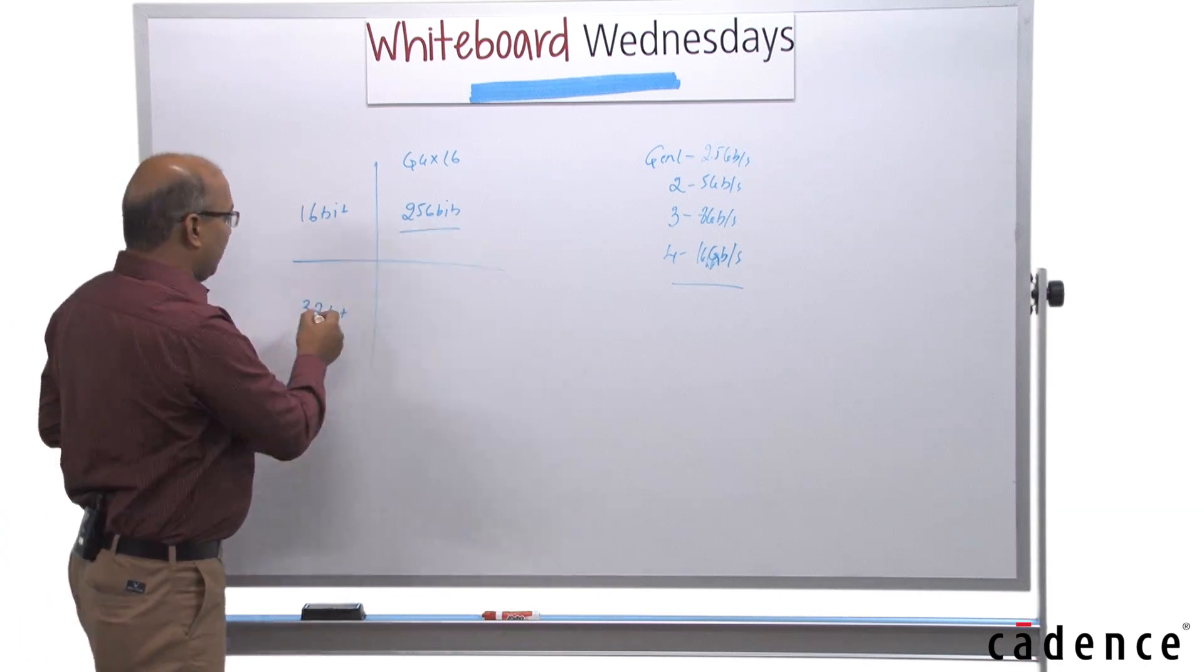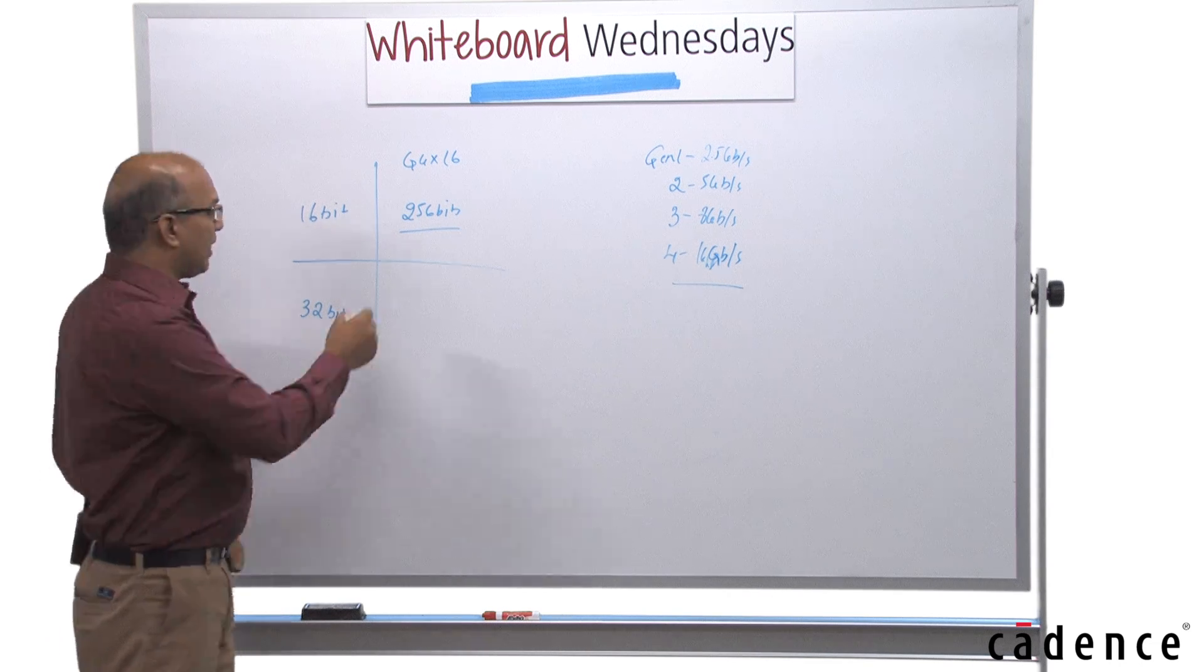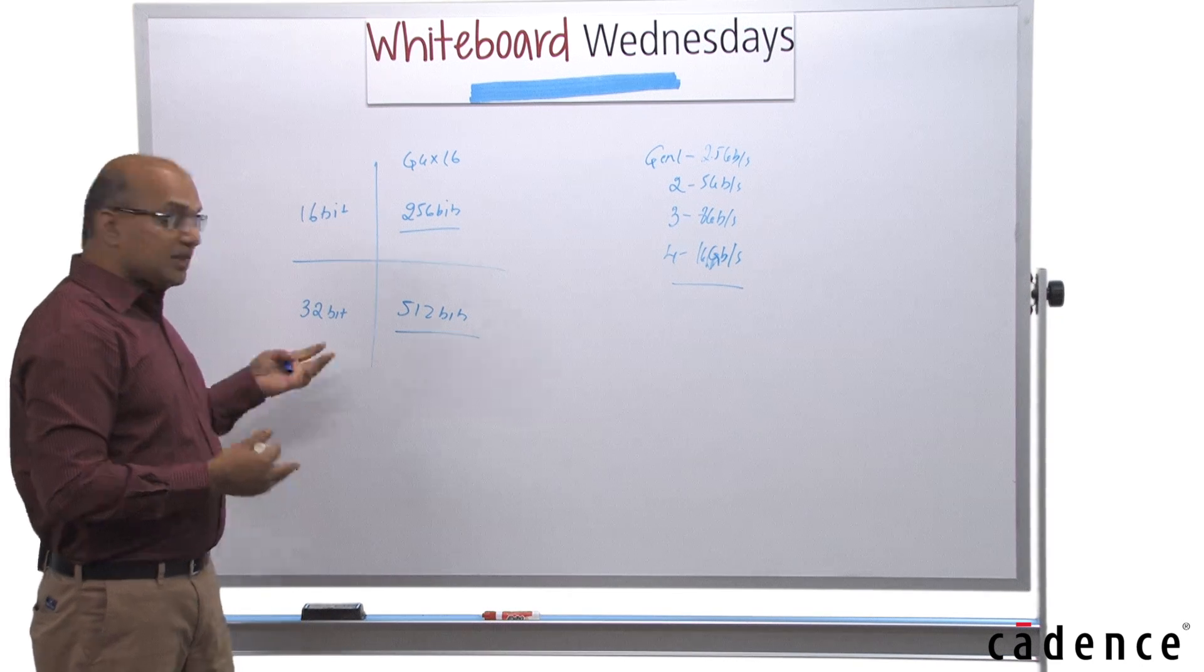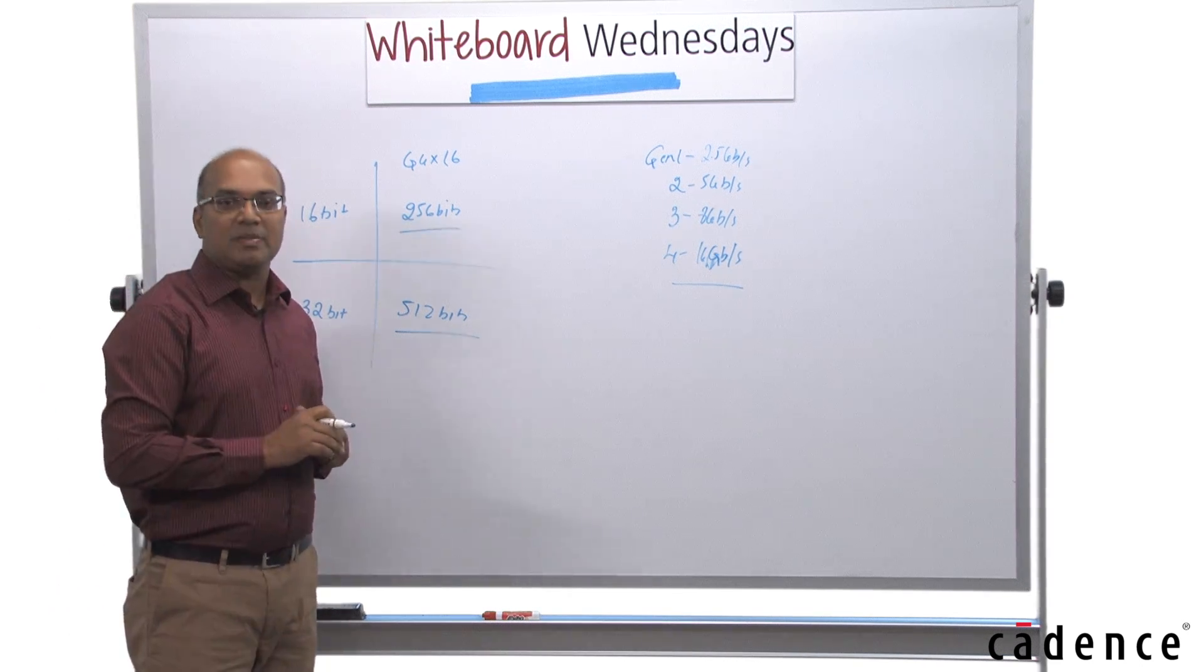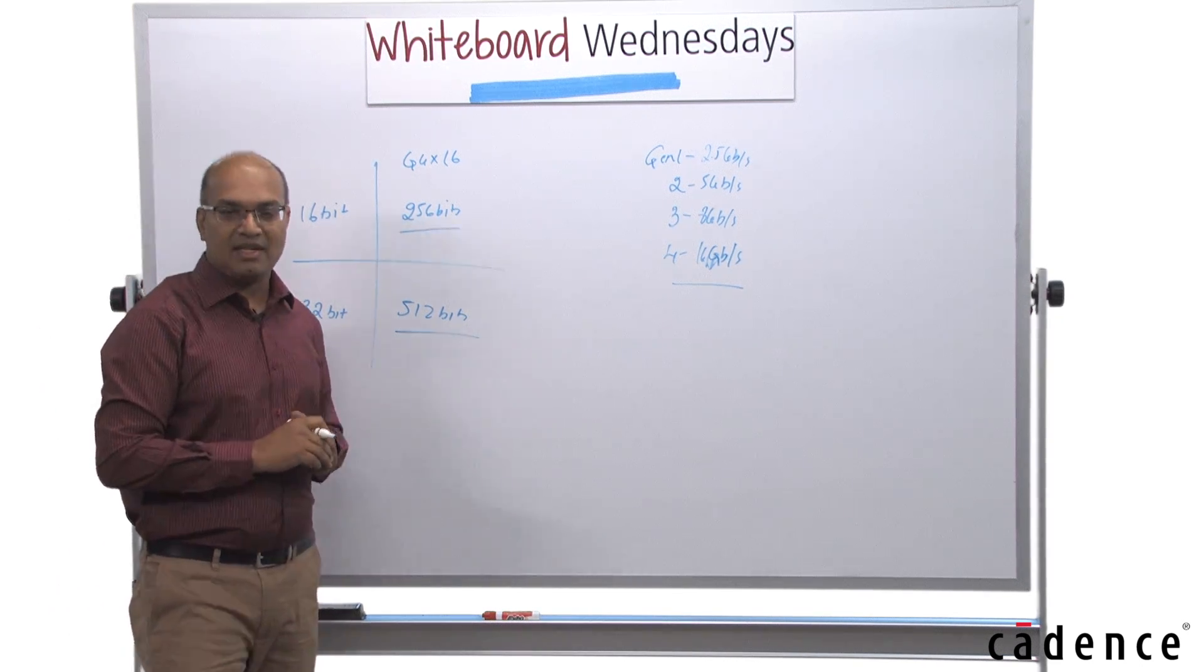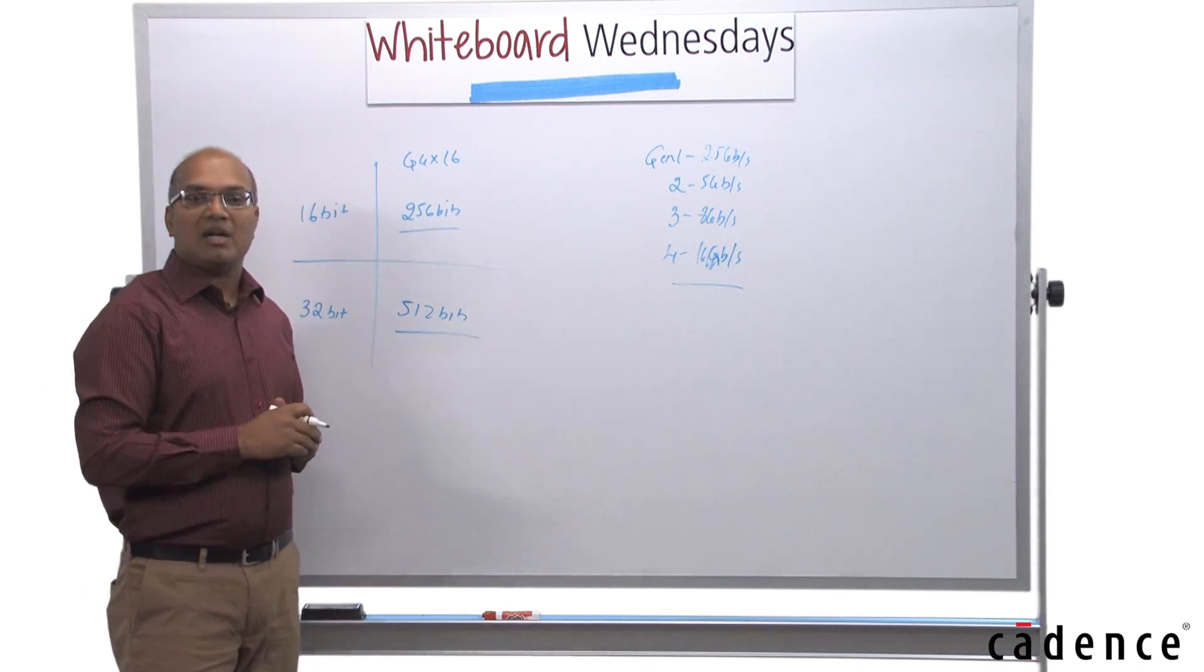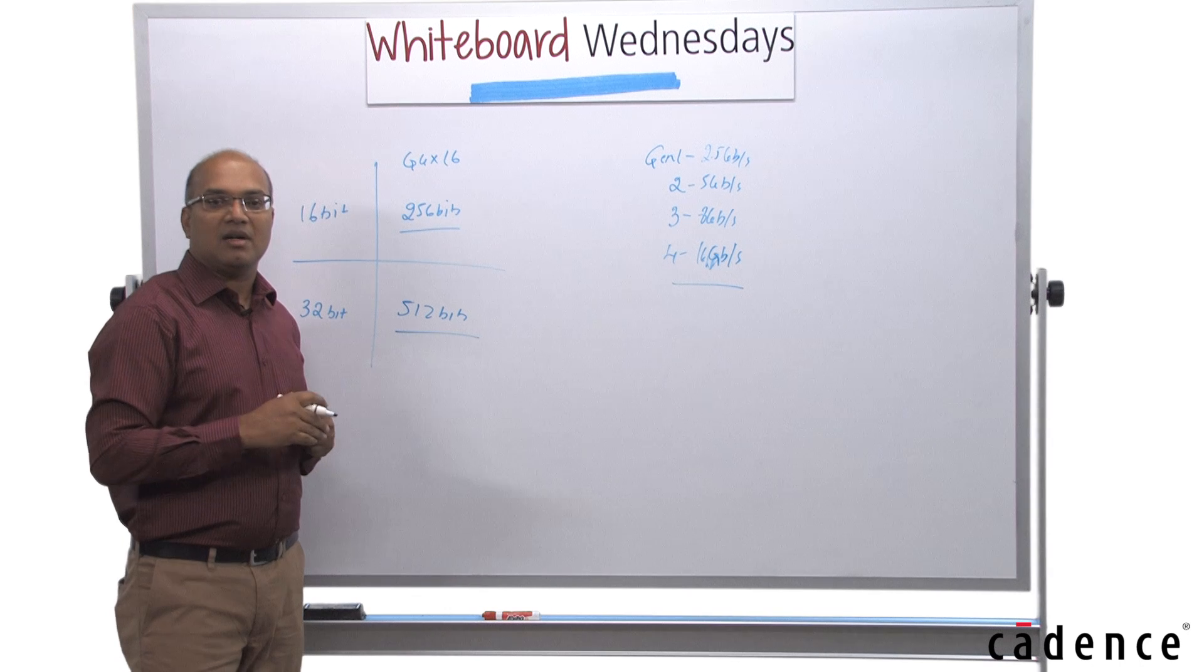So if you take a 32-bit pipe interface design, this will become 512 bits. Because it becomes 512 bits, now you could possibly get four TLPs simultaneously, or four DLPs. So because you're getting four TLPs or DLPs, you need to process four of them.